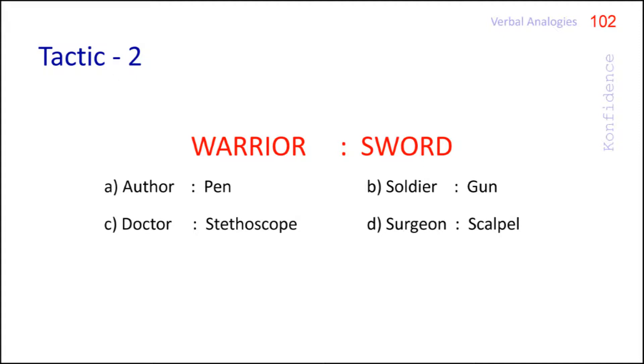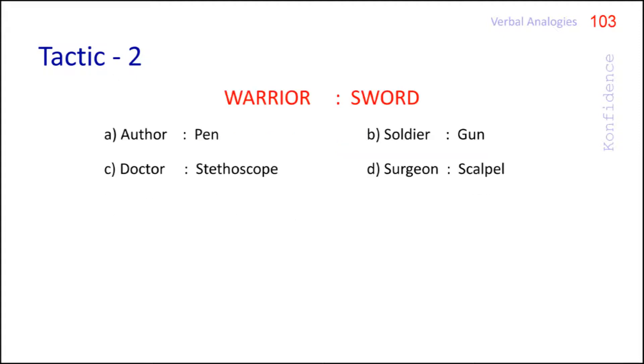Look at the example. A sword is used by a warrior. Like that an author uses pen. A doctor uses stethoscope to examine the patients. A surgeon uses scalpel in operation and a soldier uses gun. In other words, tools of different people are mentioned. That's the primary relationship. If we use that relationship, we will not be able to pick one answer from the choices.